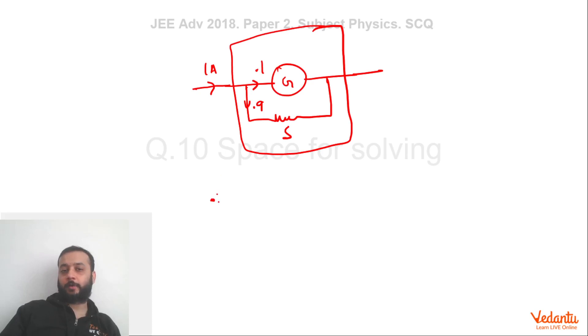So we can say that 0.1 × 50 ohms, which is the potential difference across galvanometer, must equal 0.9 × shunt, which is the potential difference across shunt. From here, we get S = 50/9, which will become 5.56 ohms.